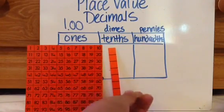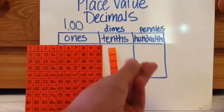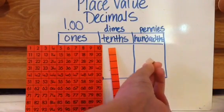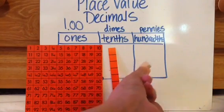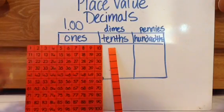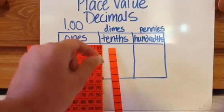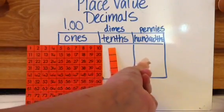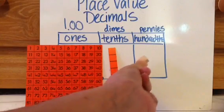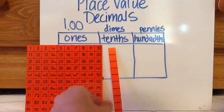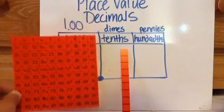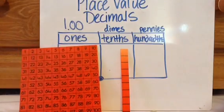This stick works great to represent the tenths place because I need ten of these to make one dollar — so it's like saying this is a dime. A dime is one tenth of a dollar, or this stick is one tenth of a hundreds block. And this little cube is great for the hundredths place because a hundred of these make one of these. So this is your penny, this is your tenths block, and this is your ones block. This only works with decimals.